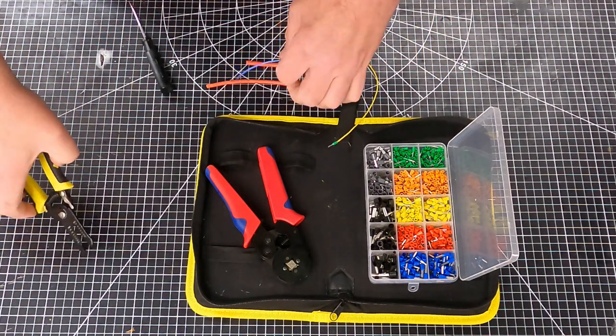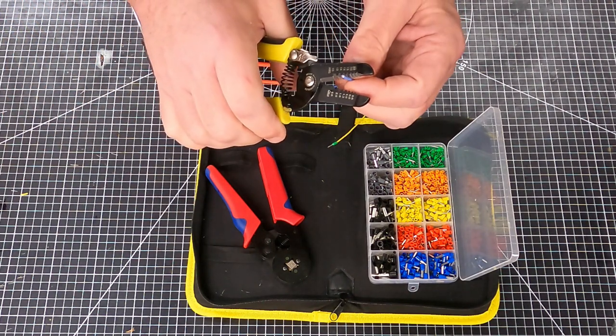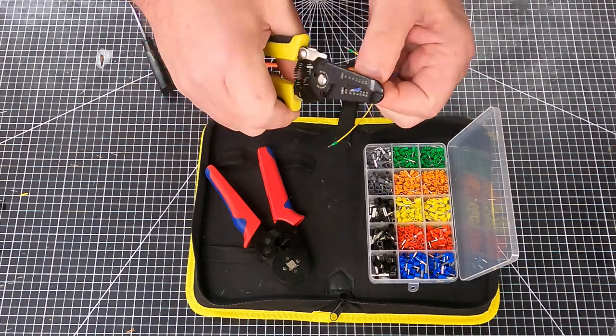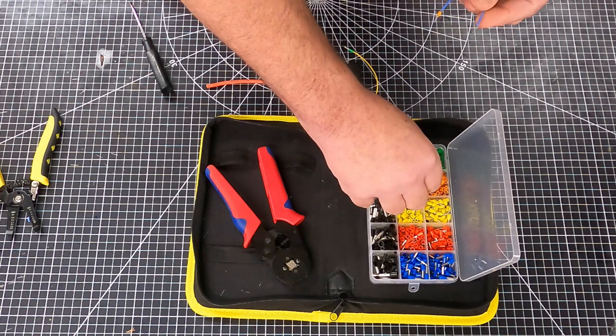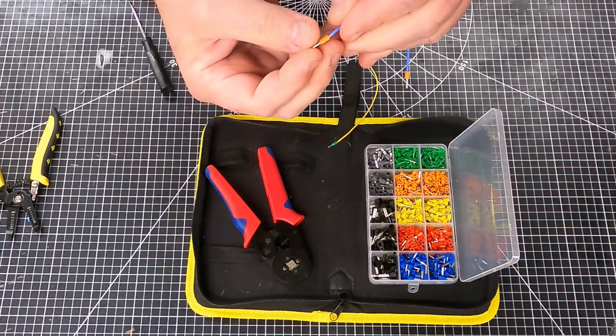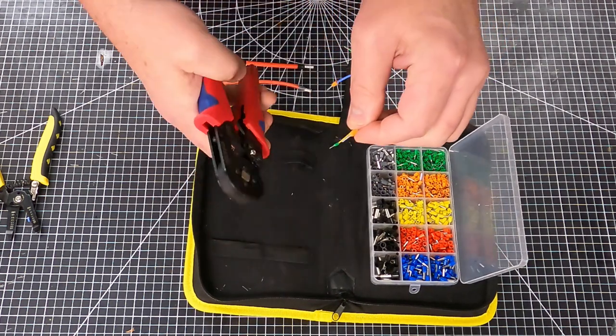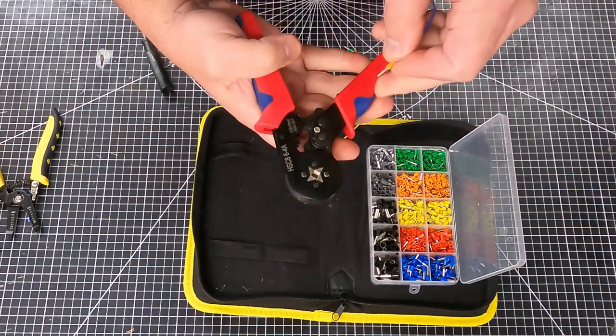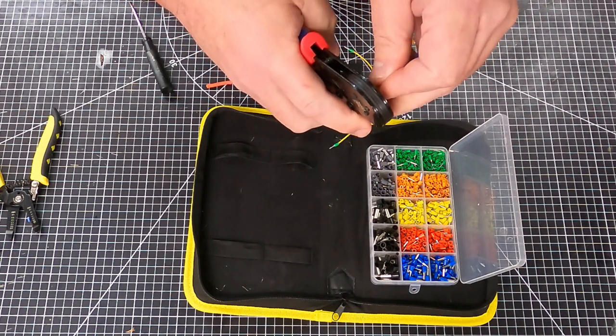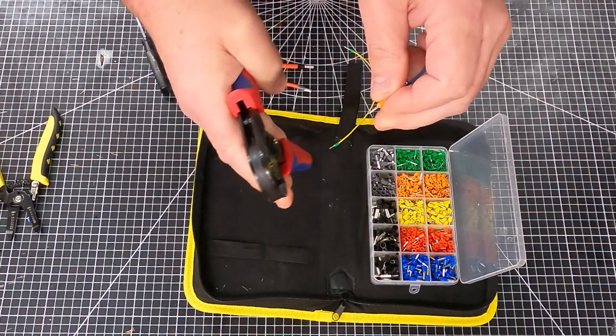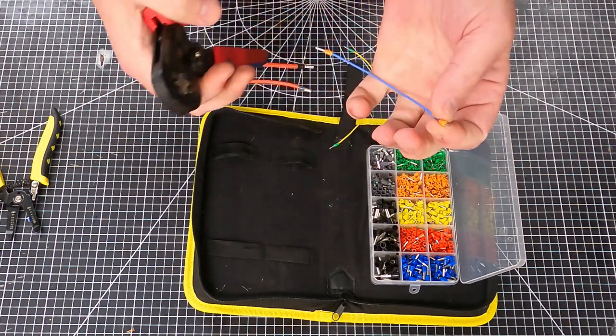This kit comes with a bunch of different sizes. This is the 20 gauge—that's going to be an orange terminal. I want to get that all the way up into the terminal. Now, these crimpers, it doesn't matter what size you put in, they're always right. That is a nice crimp, really good crimp retention there.